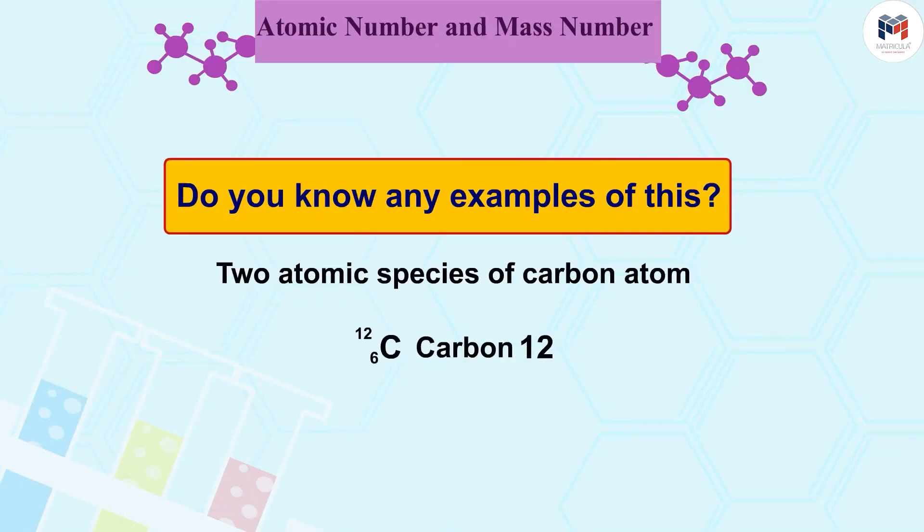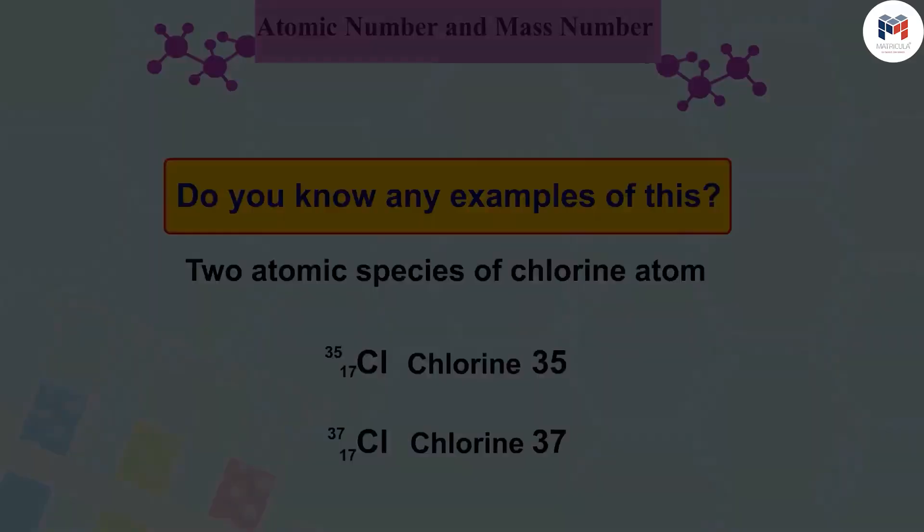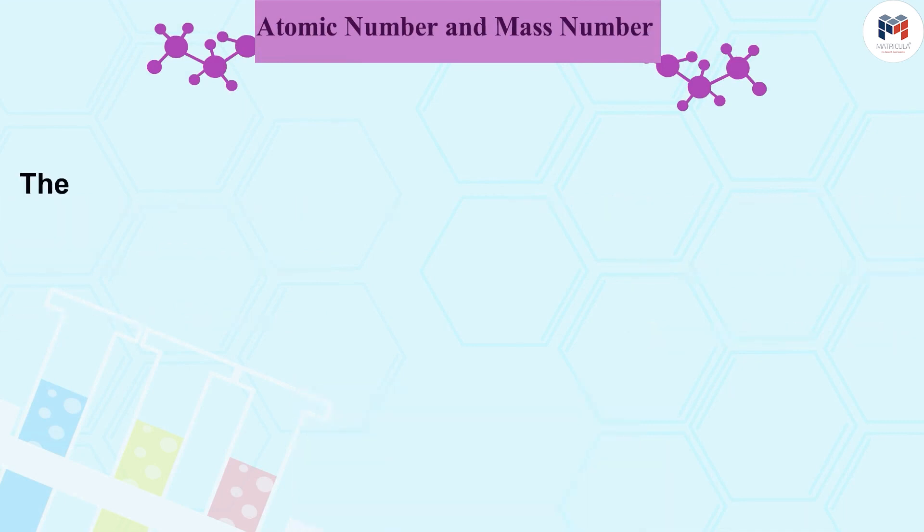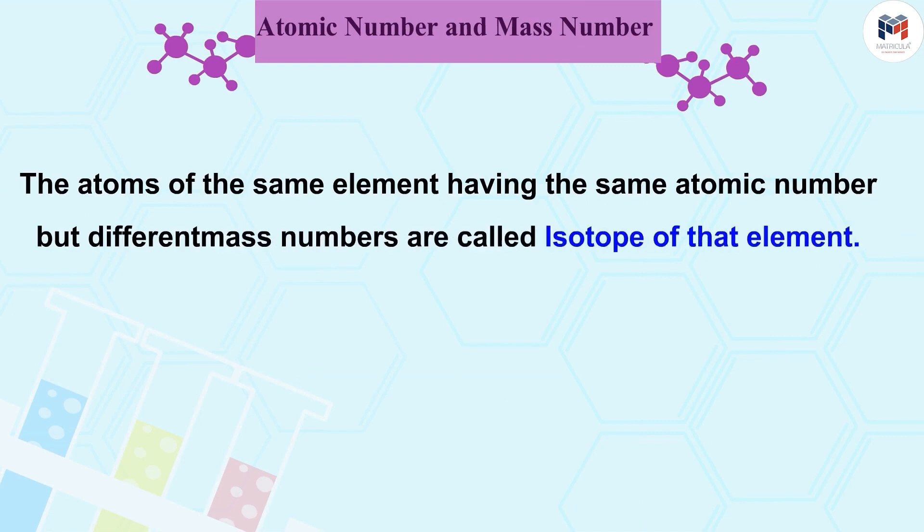Carbon 12 and carbon 14 and chlorine 35 and chlorine 37 are some other examples of this kind. These atomic species have a special name. We call them isotopes. The atoms of the same element having the same atomic number but different mass numbers are called isotopes of that element.